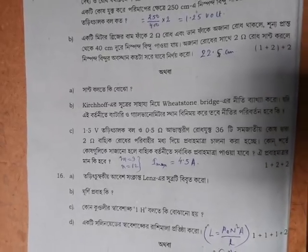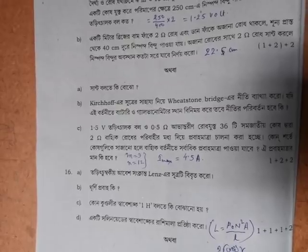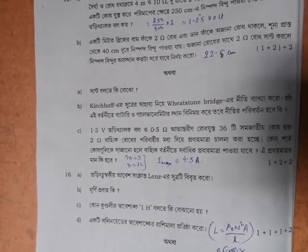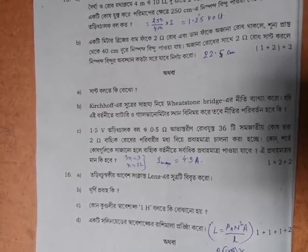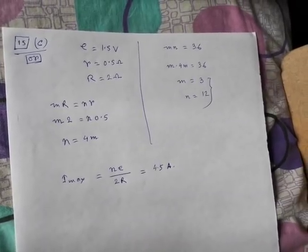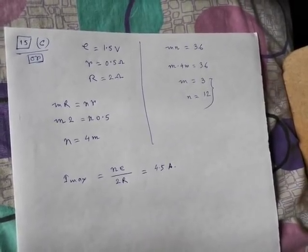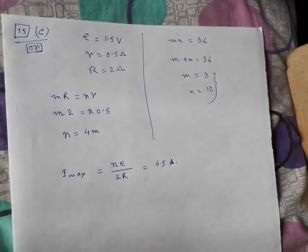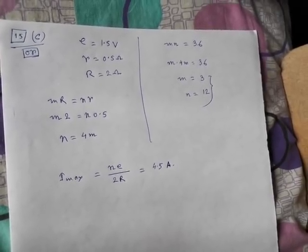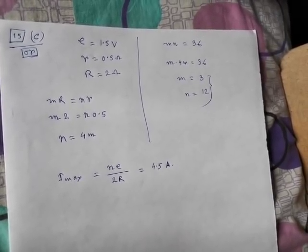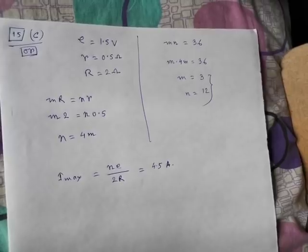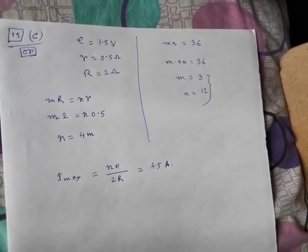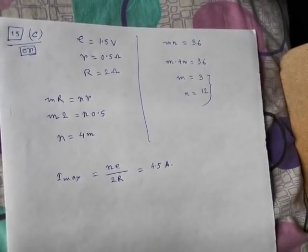The output is 22.5cm. M is equal to 3, N is equal to 12, IM is equal to 4.5m, and the output M is equal to 36. N is equal to R, N is equal to 4, M is equal to 3, N is equal to 12, and IMAX is equal to N jumps to 2R. The output is 4.5m.